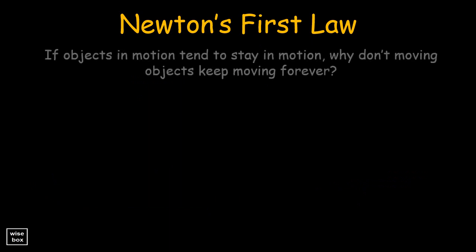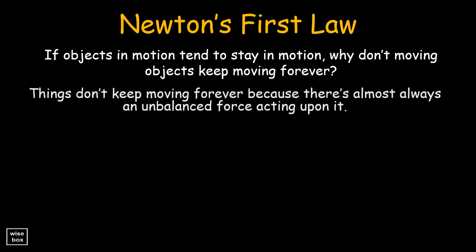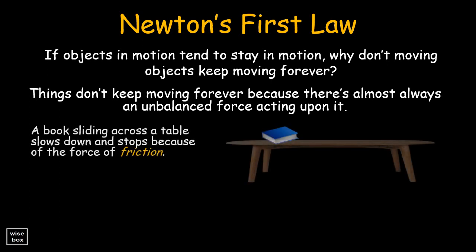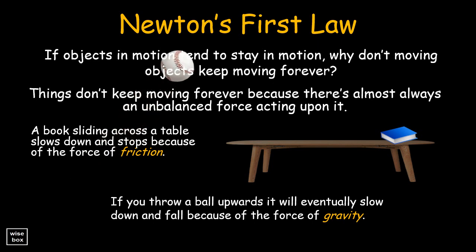If objects in motion tend to stay in motion, why don't moving objects keep moving forever? Things don't keep moving forever because there's almost always an unbalanced force acting upon it. A book sliding across a table slows down and stops because of the force of friction. If you throw a ball upwards, it will eventually slow down and fall because of the force of gravity.